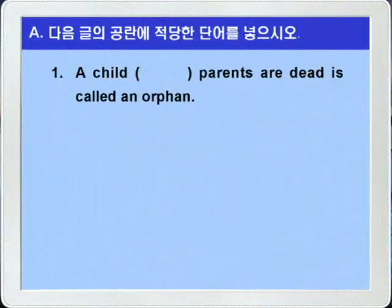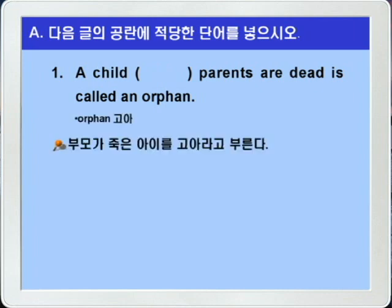A child whose parents are dead is called an orphan. 부모가 죽은 아이는 고아라고 불리운다. 정리해보면 부모가 죽은 아이를 고아라고 부른다, 이런 뜻이죠.